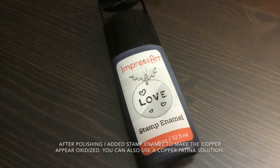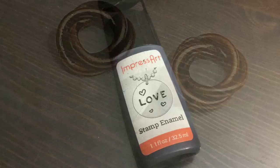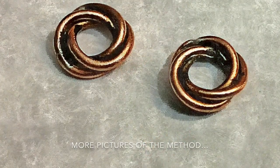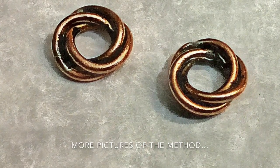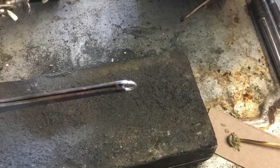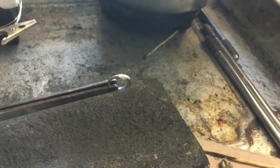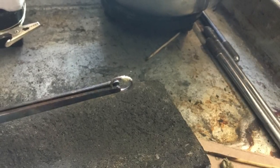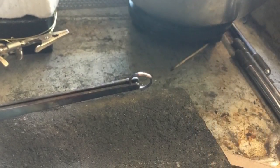And for the end, I just actually added a bit of stamp enamel and it gave it an artificial patina. But you can also use a copper patina if necessary. So that's the end of the project. I hope you liked it. If you did, please like, share, subscribe and comment and we'll see you next time. Thanks for coming. Bye for now.